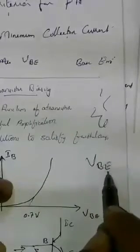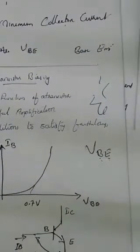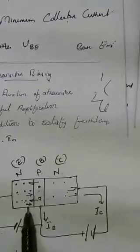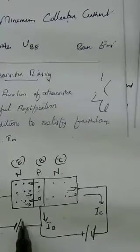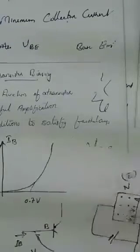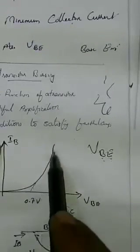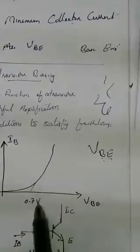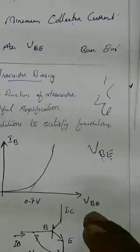The second condition is minimum proper VBE — the base-emitter voltage. The emitter-base junction acts like a diode junction that must remain forward biased. For a silicon transistor, the minimum VBE is 0.7V. For a germanium transistor, it is approximately 0.3V to 0.4V. If VBE falls below this threshold, the junction enters reverse bias, conduction stops, and the transistor cuts off.